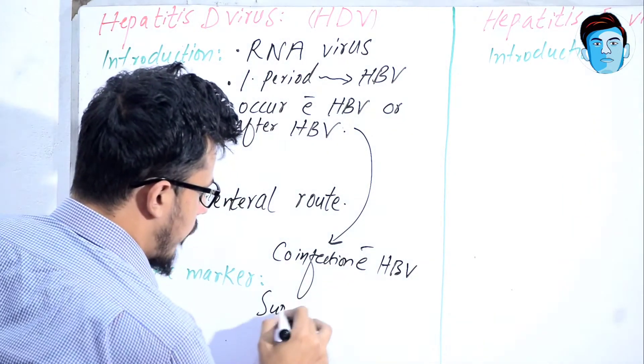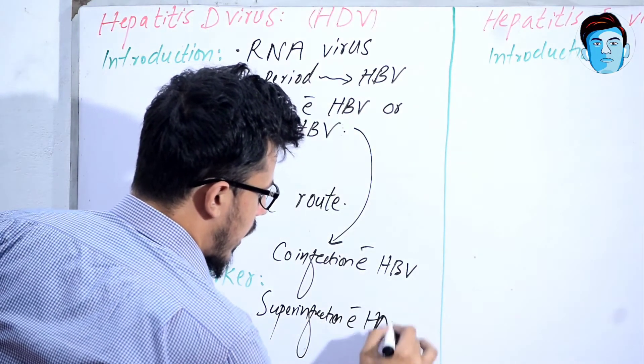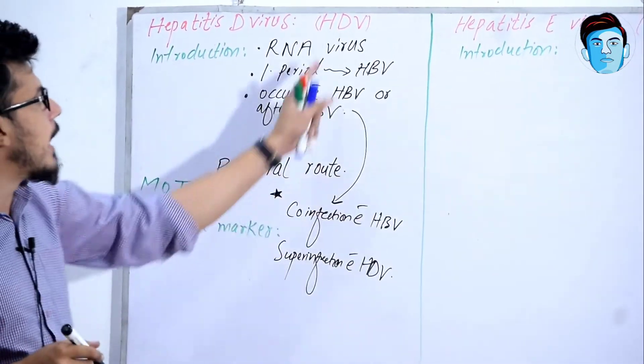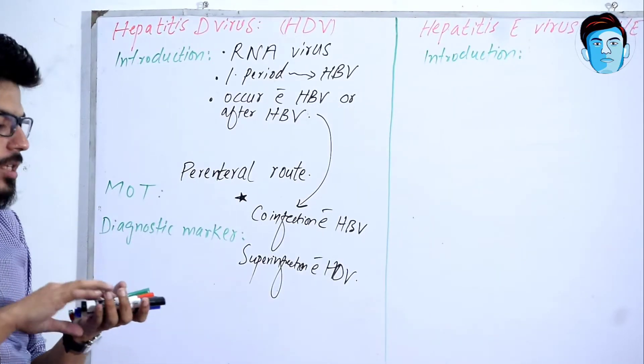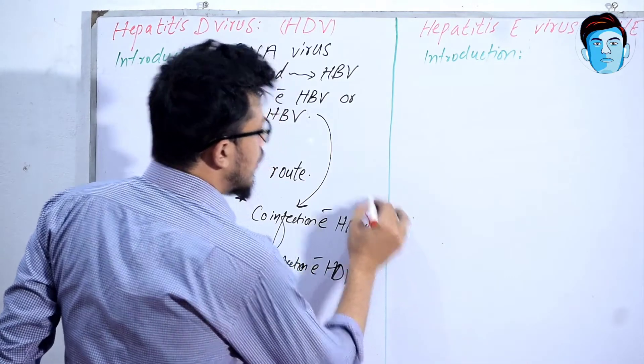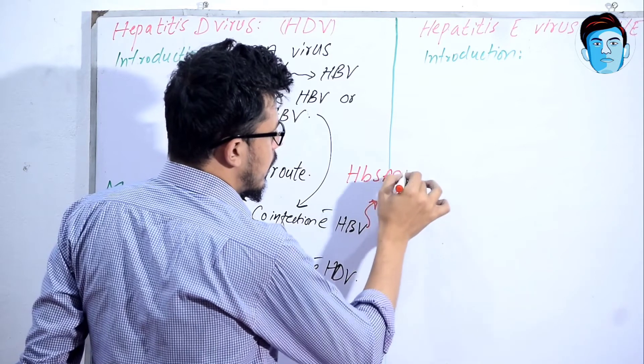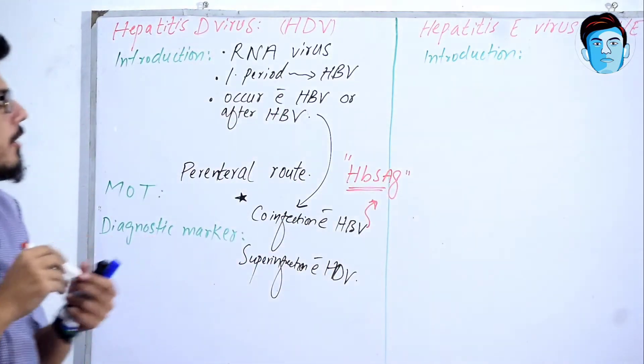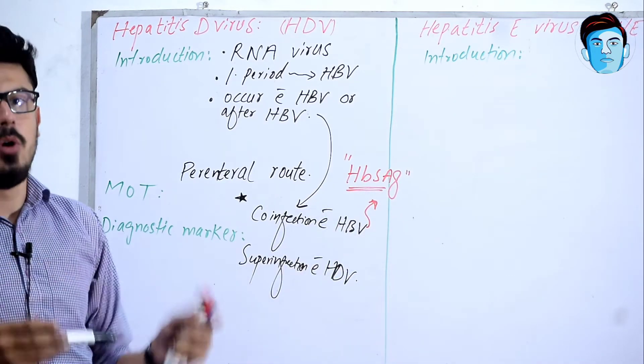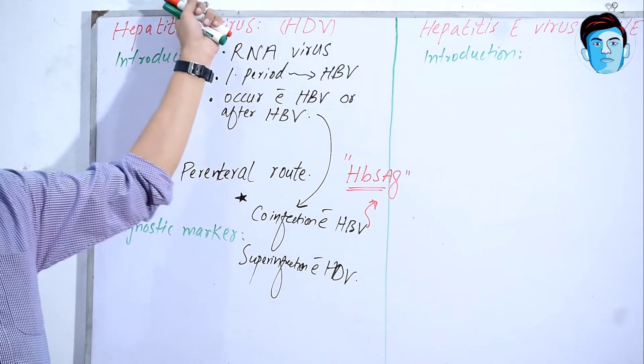And there's super infection with Hepatitis D virus. By co-infection with Hepatitis B virus, it means that Hepatitis D virus requires Hepatitis B surface antigen in order to replicate its own genome. Hepatitis D virus is basically dependent on Hepatitis B virus.